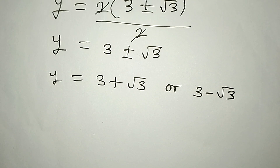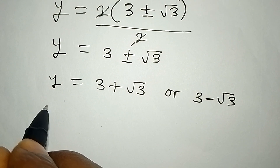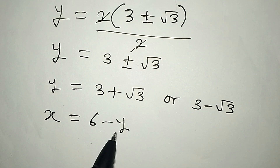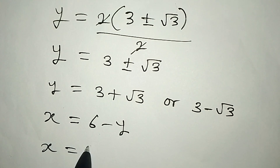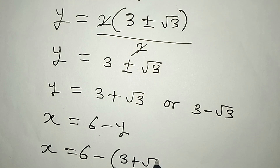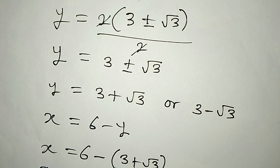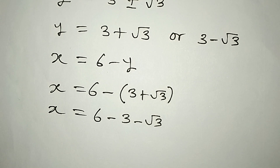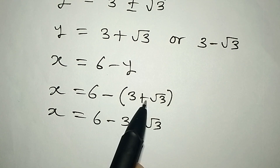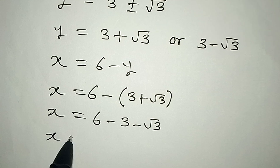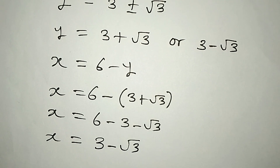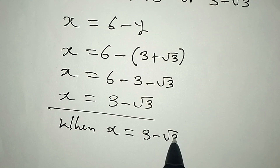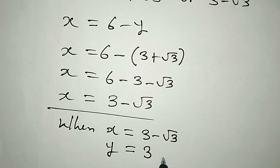This is a simultaneous equation so we also need the value of x. Remember equation 3: x equals 6 minus y. Now that we have the value of y, put it into this equation. Using the first value of y, x equals 6 minus bracket 3 plus root 3, which gives x equals 6 minus 3 minus root 3, so x equals 3 minus root 3. So when x equals 3 minus root 3, y equals 3 plus root 3.